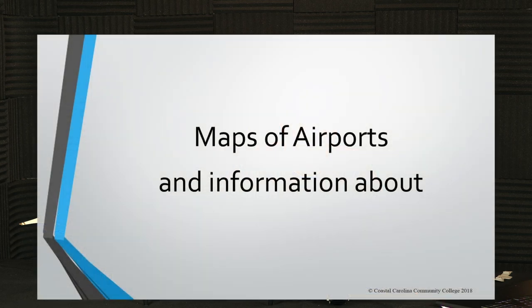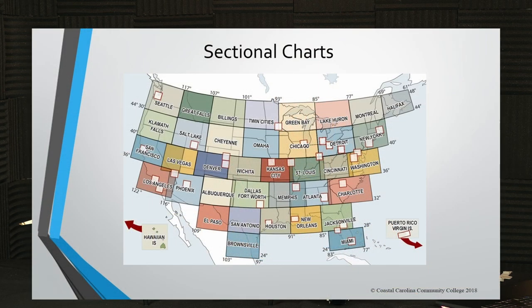We're going to teach you how to locate airports and their obstacles. The first map we have is called a sectional chart. A sectional chart covers a region of airspace. You will see that there are various sections of the United States marked out for airspace, and you can get maps of each individual section — they're called sectional charts. So each section has a map.